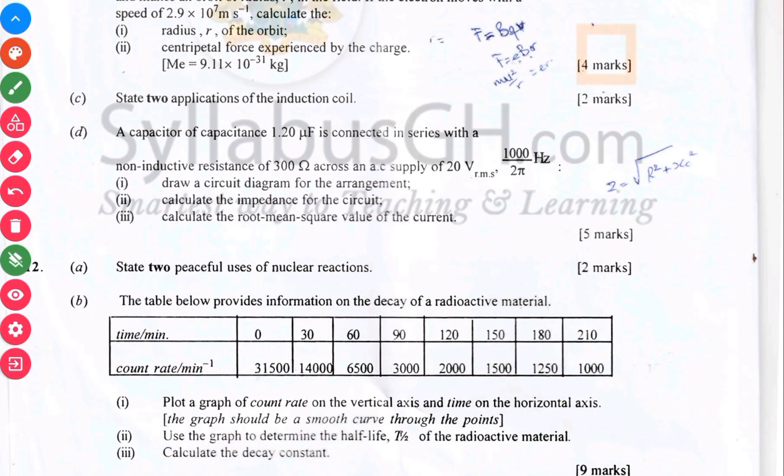C here has to do with electricity, induction coil. Then D also has to do with electricity. You can see question 12 again, nuclear physics, atomic physics. Again, state three peaceful uses of nuclear reactions.